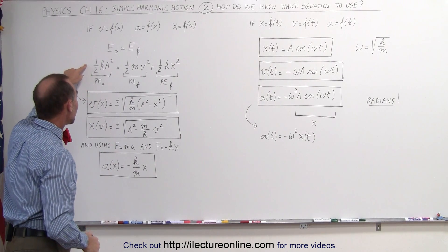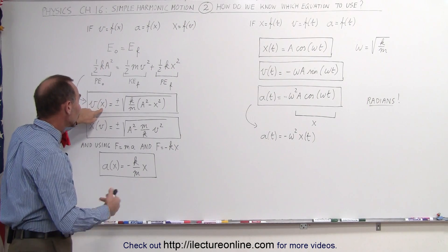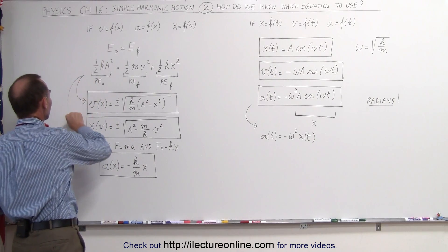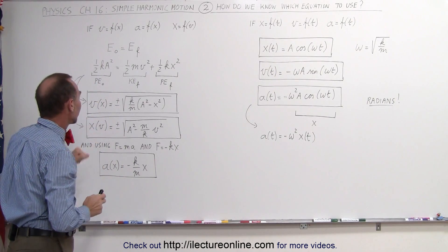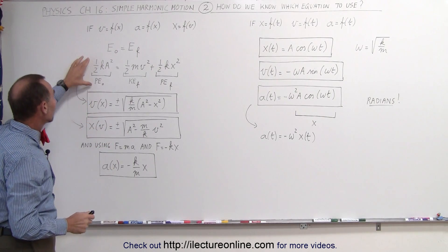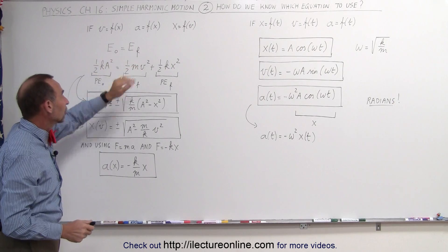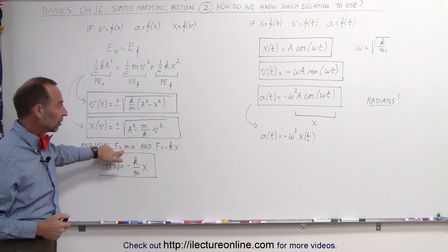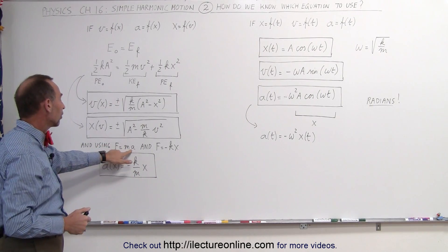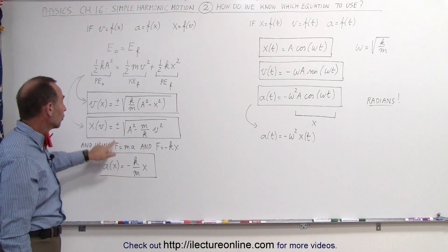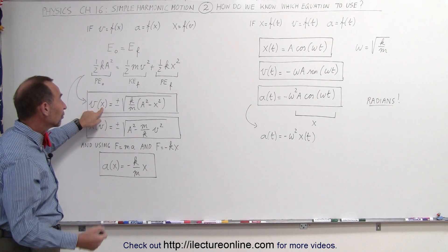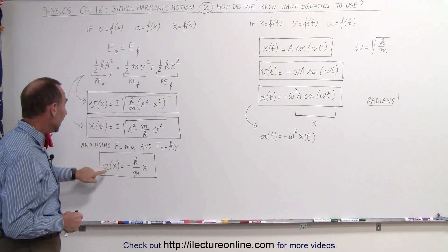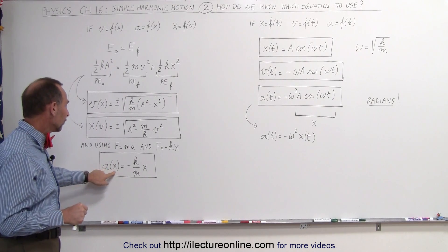From this equation, we can derive an equation solving V in terms of position or displacement from the equilibrium point, which looks like this. We can also use this equation to solve for the second equation right here, to solve for position as a function of velocity. Both of these equations come from this initial concept that energy initial equals the energy final. And finally, if we then combine Hooke's law and the concept of Newton's second law, we combine those two equations, we can solve for the acceleration of the object in terms of its position. So this equation will give you the velocity as a function of its position away from the equilibrium point. This equation will give you the position in terms of its velocity, and this equation will give the acceleration in terms of its position.